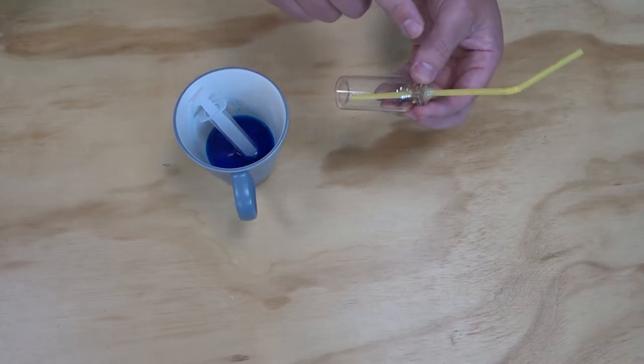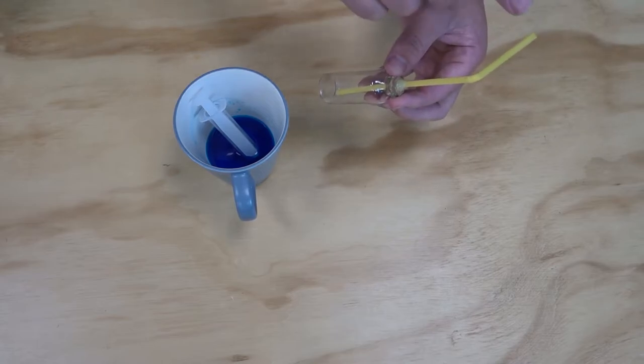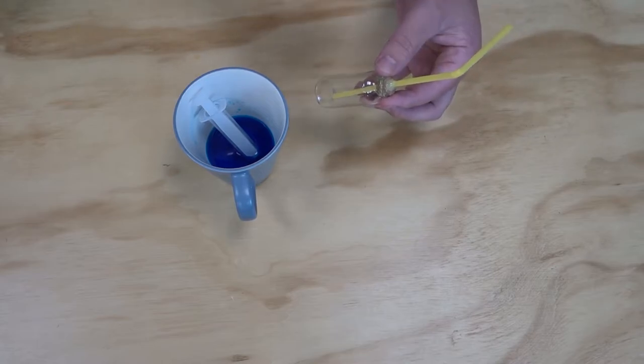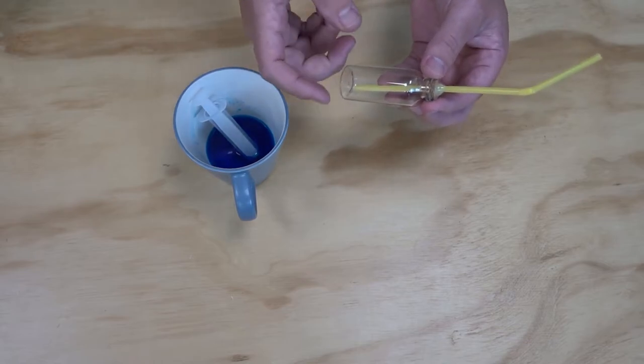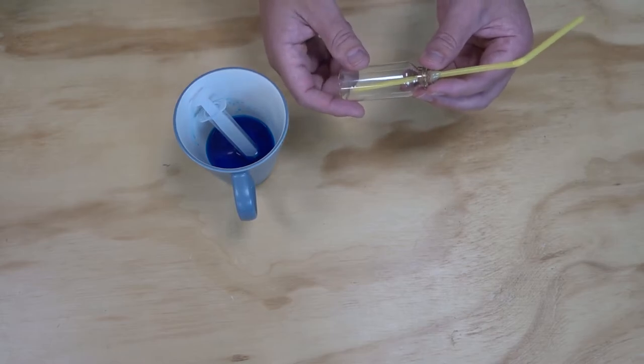After that we're going to need to do the really tricky step of adding water to the top of our straw and sealing it up. Again I'm going to use some hot glue to seal mine, but you could use modeling clay or something like that as long as you're going to get an airtight seal. So let's get the liquid into our thermometer.